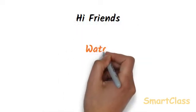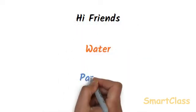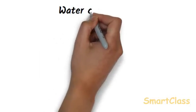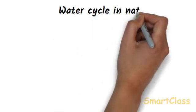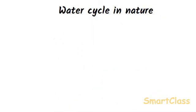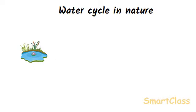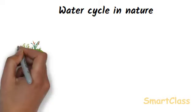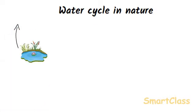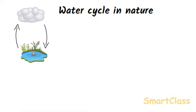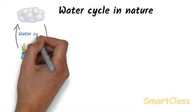Hi friends, today we will study the second part of the chapter water — water cycle in nature. The continuous circulation of water from the earth's surface to the atmosphere and from the atmosphere back to the earth is called the water cycle in nature.